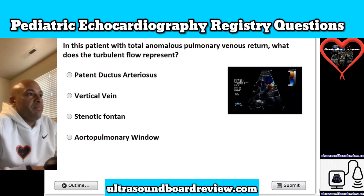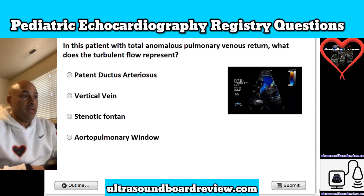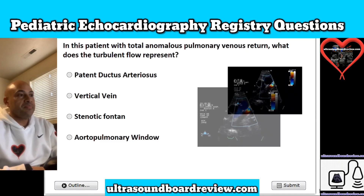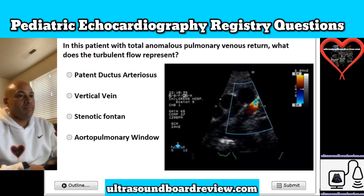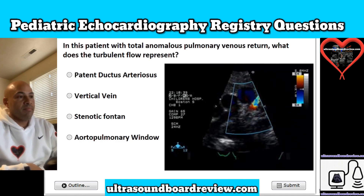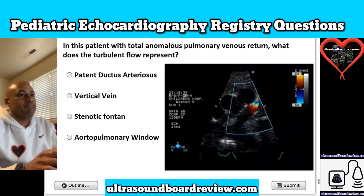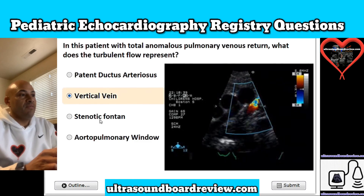Question 21. In this patient with total anomalous pulmonary venous return, what does the turbulent flow represent? Is it A, a patent ductus arteriosus; B, vertical vein; C, stenotic Fontan; or D, aortopulmonary window? The answer is B, vertical vein.